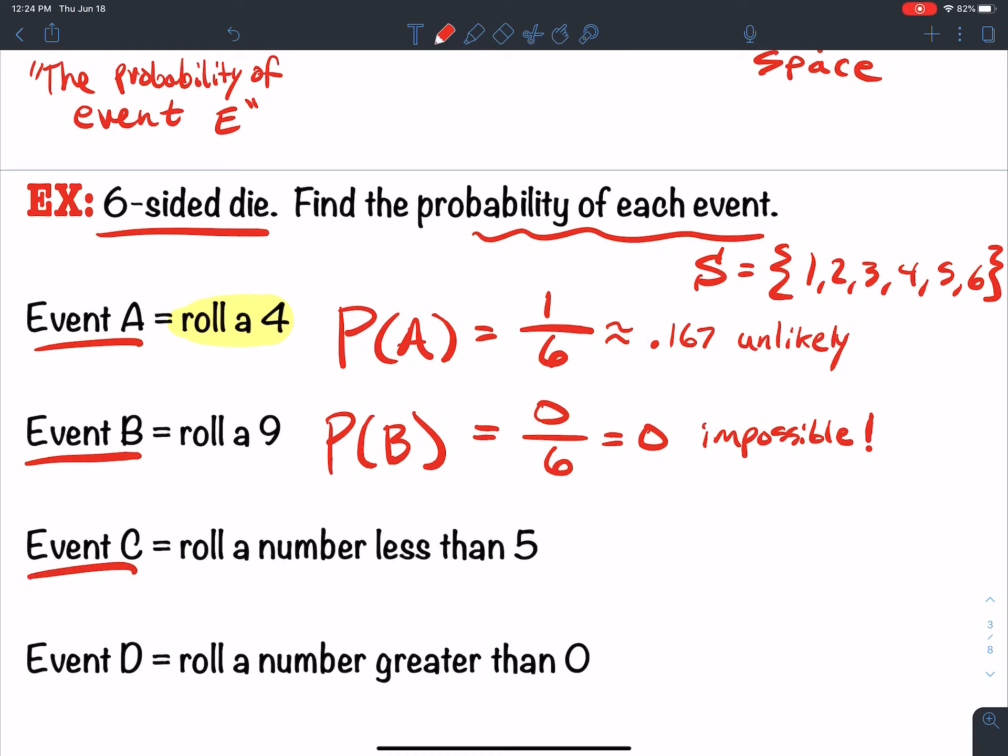Now event C. To find the probability of event C, roll a number that's less than five. Numbers that are less than five are one, two, three, and four. That's four digits that are less than five. So four total ways to roll a number less than five out of six total, which reduces to two thirds or .667.